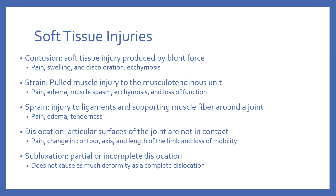Soft tissue injuries are injuries that occur in the non-bone structures of the musculoskeletal system. There are several types, some of which you may have heard of growing up. The first is a contusion, a soft tissue injury produced by blunt force — essentially a really bad bruise. Symptoms include pain, edema, and ecchymosis, which is bruising.